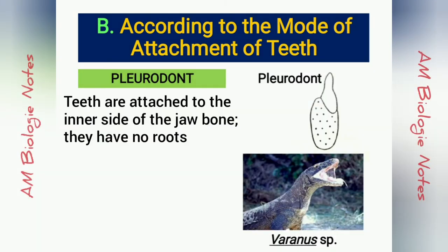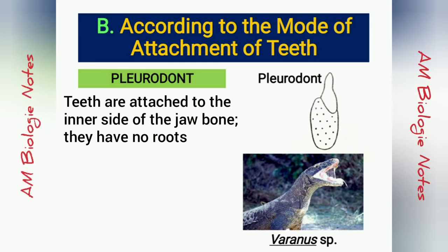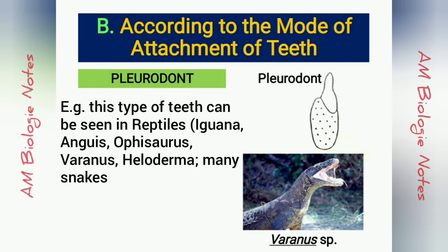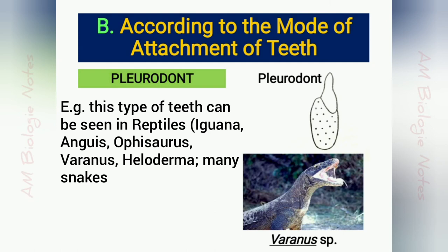Pleurodont: Here, the teeth are attached to the inner side of the jawbone. They have no roots. This kind of teeth are found in reptiles, for example iguana, Anguis, Varanus, Varanus, Heloderma, etc., and many snakes.